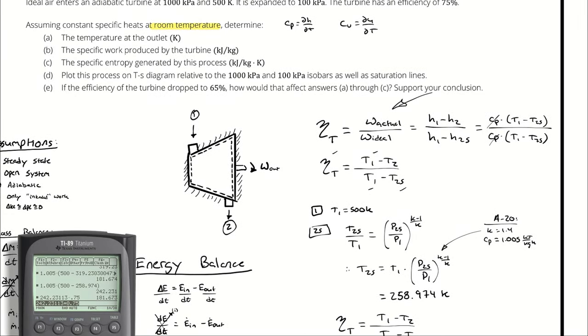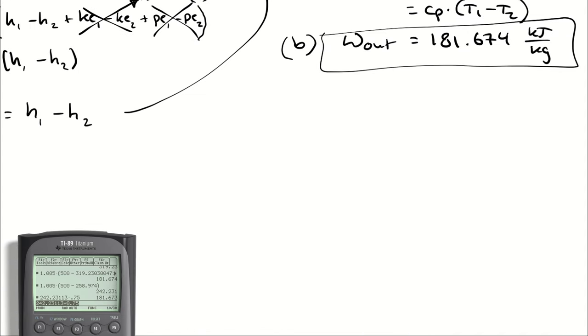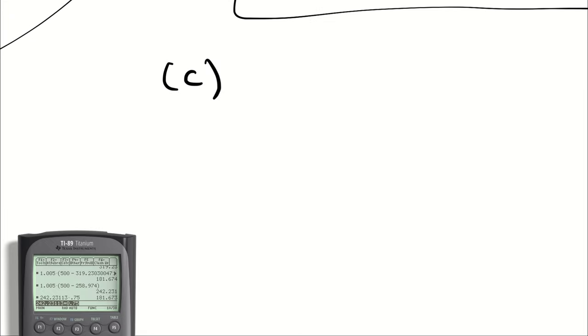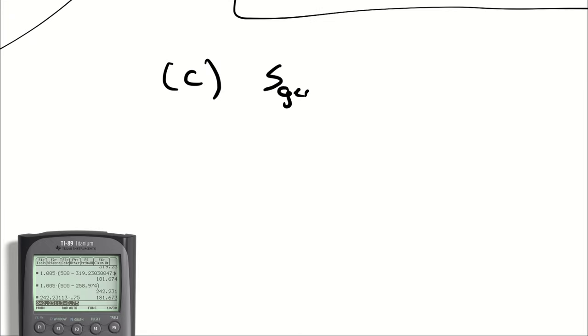Part C asks me to figure out the specific entropy generated by this process. Well, that seems involved. Little S-Gen, or rather, let me show you where I'm getting that. Big S-Gen is equal to delta big S of the system plus delta big S of the surroundings.